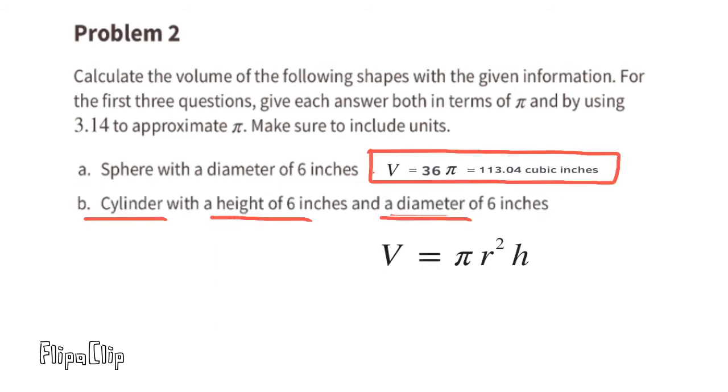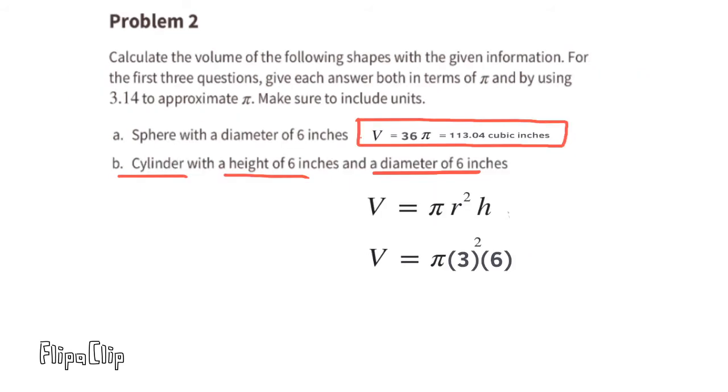B. Cylinder with a height of 6 inches and a diameter of 6 inches. Using the formula to find the volume of a cylinder, we can substitute the R with half the diameter. Half the diameter would be 3, and we can substitute the H with a 6. 3 squared is 9.